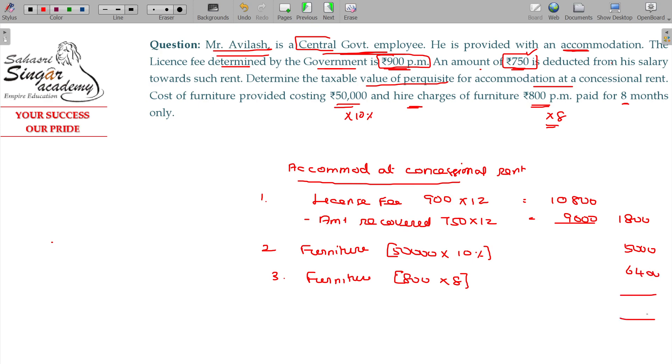Add up these three values: 13,200 will be the taxable perquisites.